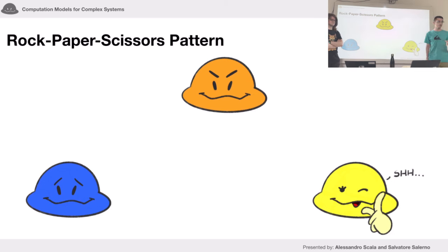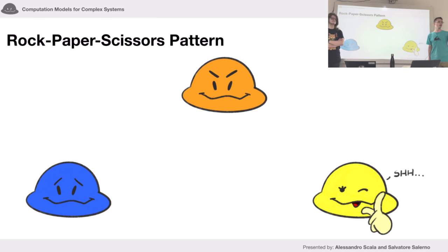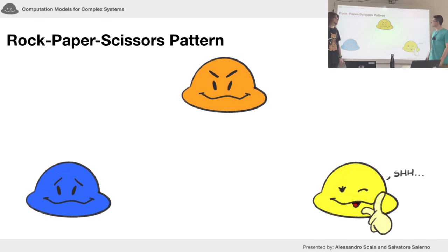Let's explain the rock-paper-scissors pattern. The survival pattern of the morphs is similar to the game of rock-paper-scissors, where we have three moves and each move can beat another one. For example, rock beats scissors but is beaten by paper. Here we have the lizards — the colors are a little messy — but this is the orange lizard, the blue lizard, and the yellow lizard.